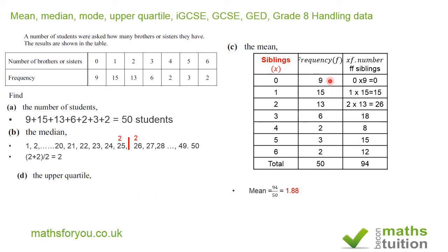So after the ninth student is there, 9 plus 15 is 24, so after the 24th student is there. So 24 plus 13 gives us 37. So after the 37th student is in this category.